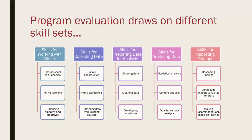Another set of skills are those for analyzing data, which includes statistical analysis such as using simple descriptive statistics and more complex inferential analysis, content analysis to examine records and discover relevant patterns, and qualitative data analysis to discover trends or themes in verbal or iconic responses such as narratives or drawings. There are also skills for reporting findings, which include describing the findings through accurate, succinct, and well-organized narratives and graphics, connecting findings to current related research literature, and making recommendations based on findings to program staff and other stakeholders.